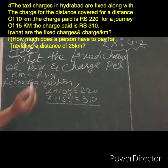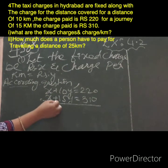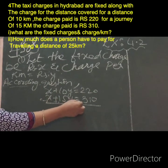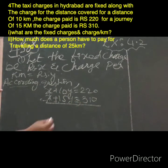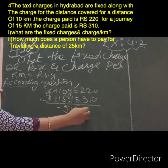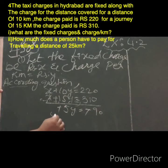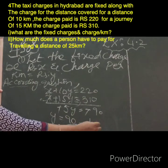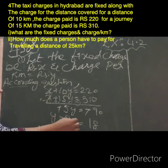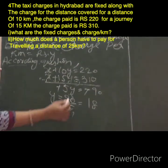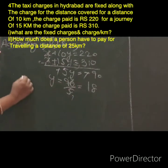Here I can do the solution using subtraction. Plus becomes minus, plus becomes minus, and the X terms get cancelled. This gives minus 5Y equals minus 90. The minuses cancel, so Y equals 90 divided by 5, which equals 18. Therefore Y equals 18 rupees, which is the charge per kilometer.